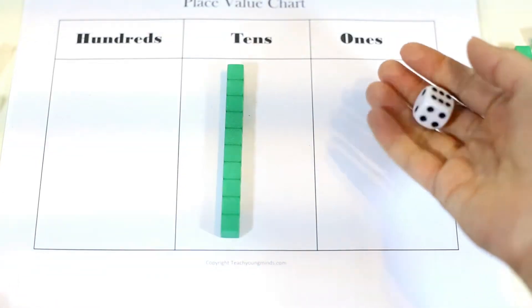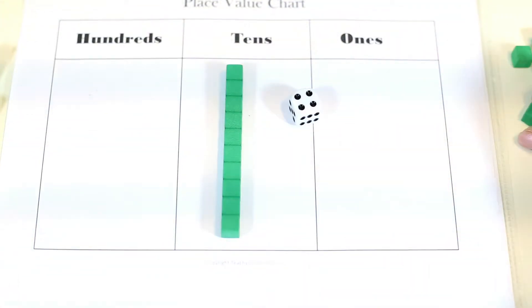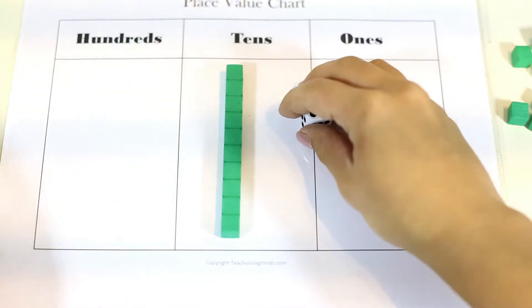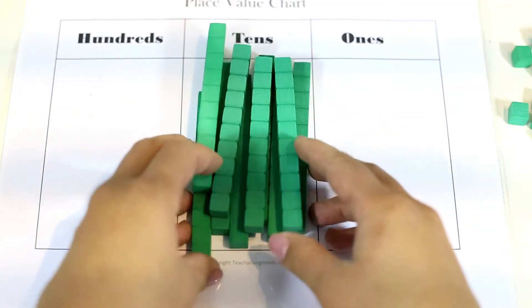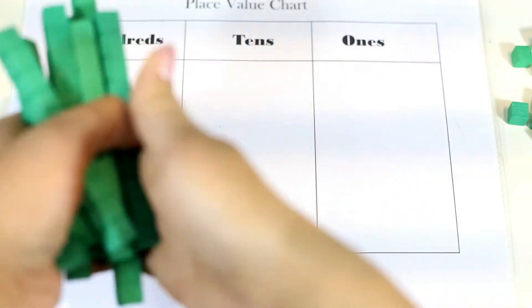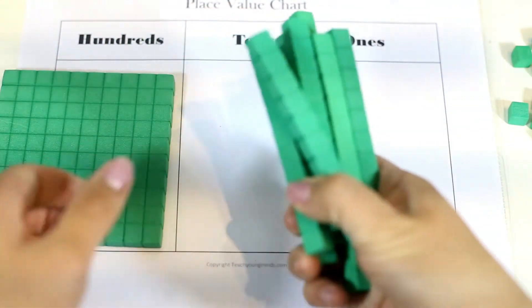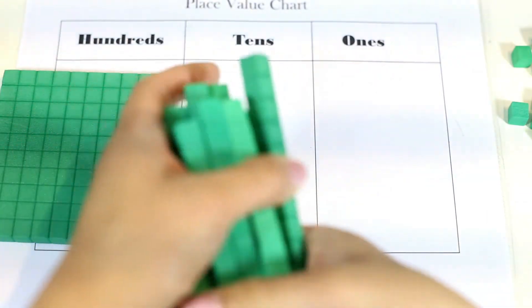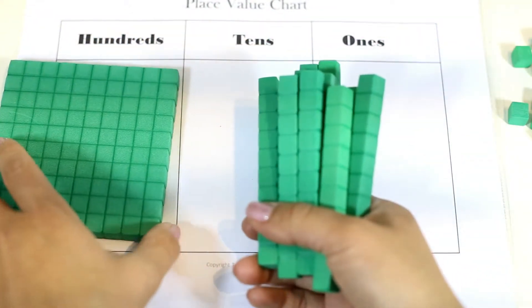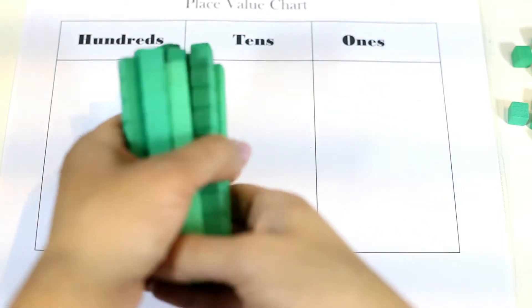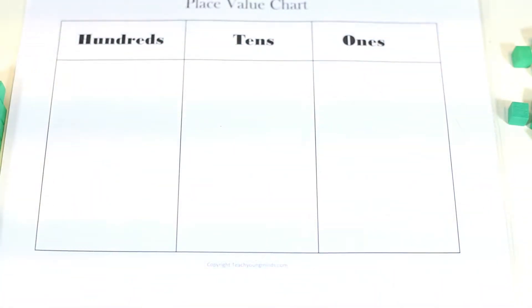They basically keep going until they get 10 tens. And when 10 tens happens, these 10 tens become 1 hundred. Obviously, you can play to a smaller number, possibly 20 or 50, depending on how much time you have with this activity.